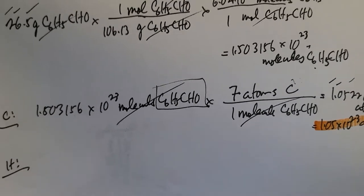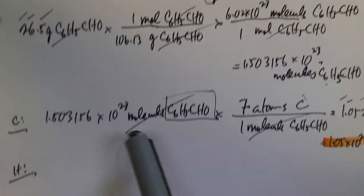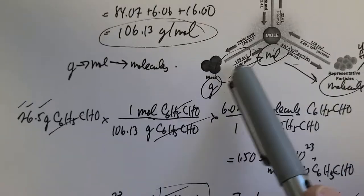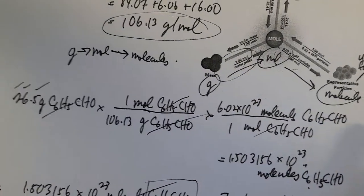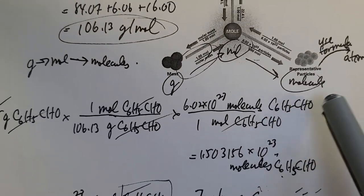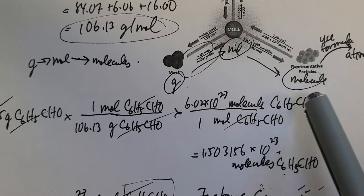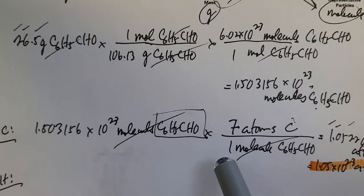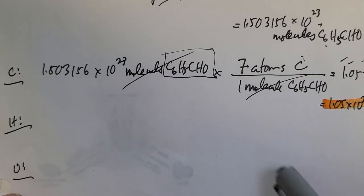Welcome back to physical science. We looked at benzaldehyde and figured out how to go from grams to moles to molecules of benzaldehyde. Then, for every one molecule, there were six plus one — seven — carbon atoms. That's how we find individual carbon atoms.